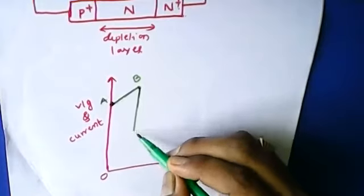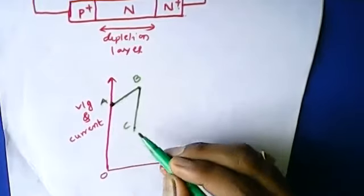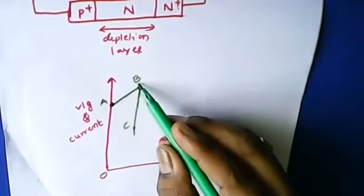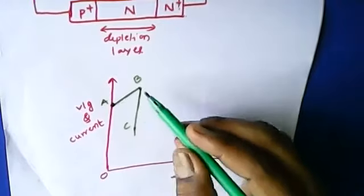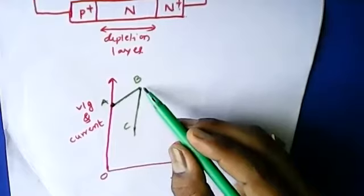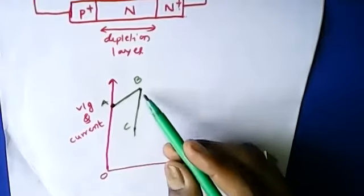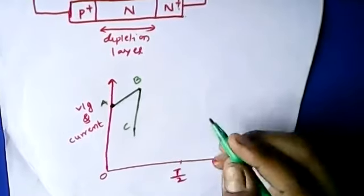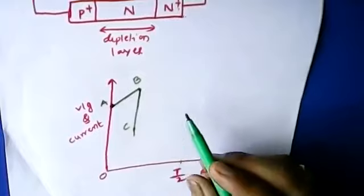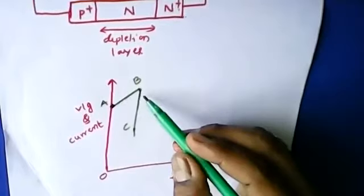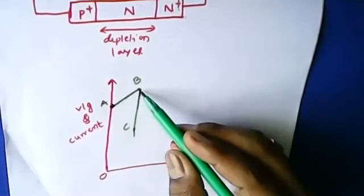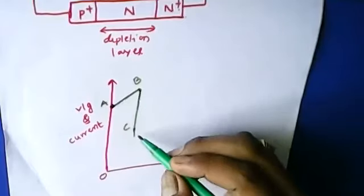The voltage drops to approximately point C. From point B to C, the electric field is sufficiently large to continue generating the dense plasma of electrons and holes. The dense plasma of electrons and holes is created because of the dropping of the voltage.